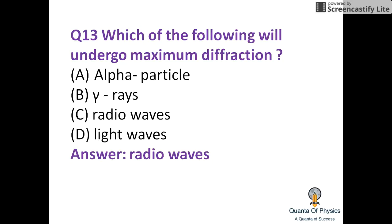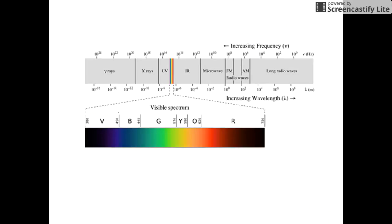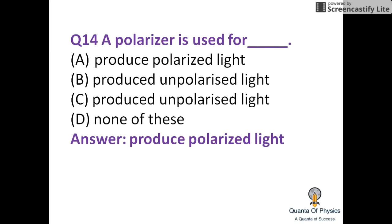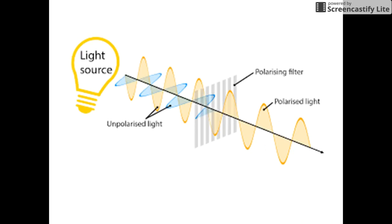Radio waves undergo maximum diffraction. Here is a spectrum of electromagnetic waves. A polarizer is used to produce polarized light — the incoming wave is unpolarized, passes through the polarizer (also called a filter), and the output is polarized light.